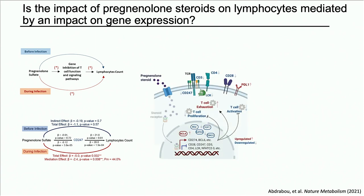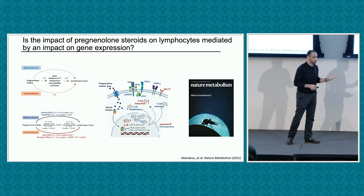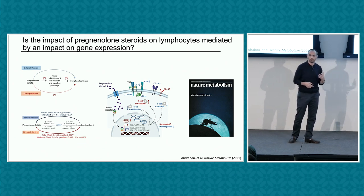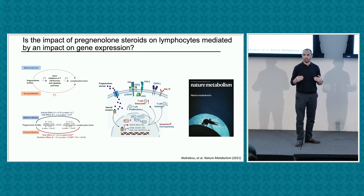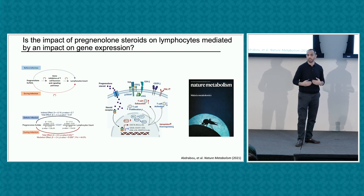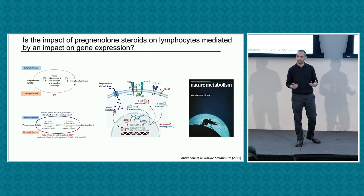We took this to the lab and tested T cell proliferation in the presence and absence of these steroids. We showed that the signaling pathways belonging to T cell exhaustion are upregulated when we add these steroids, and T cell proliferation and cytokine synthesis are downregulated when we add these steroids to PBMCs. We also showed that these steroids have different variation between ethnic groups that may incorporate resistance to malaria.